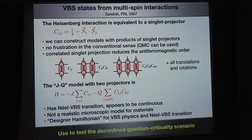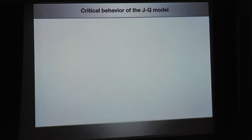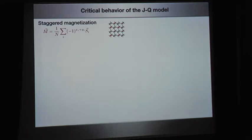This is a designer Hamiltonian to study valence bond physics and the phase transition. Previous frustrated models that could produce VBS states were not amenable to quantum Monte Carlo calculations because of the sign problem, so no reliable method had worked well. The JQ model provides a sign-problem-free way to test the deconfined criticality scenario by allowing us to go between the Néel state and the VBS state.